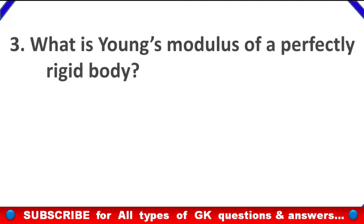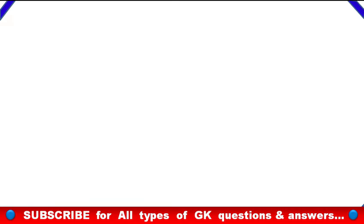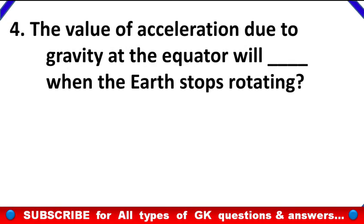What is the Young's modulus of a perfectly rigid body? Answer: Infinity. The value of acceleration due to gravity at the equator will dash when the Earth stops rotating. Answer: Increase.